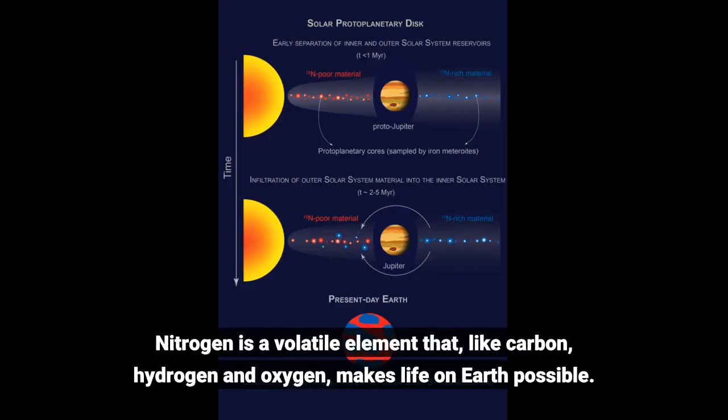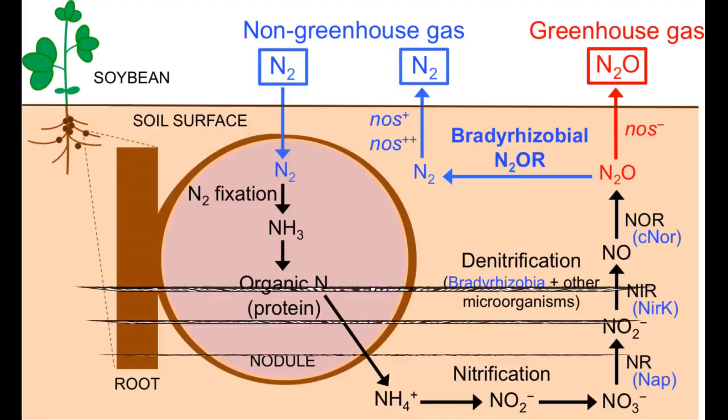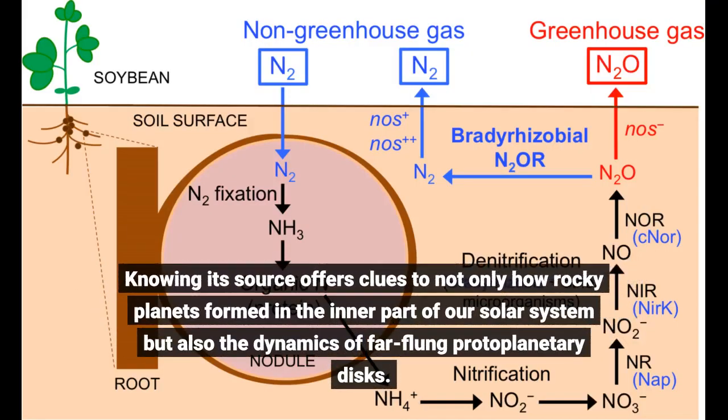Nitrogen is a volatile element that, like carbon, hydrogen and oxygen, makes life on Earth possible. Knowing its source offers clues to not only how rocky planets formed in the inner part of our solar system but also the dynamics of far-flung protoplanetary disks.